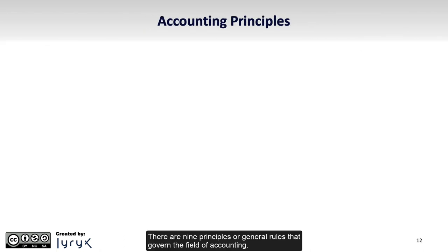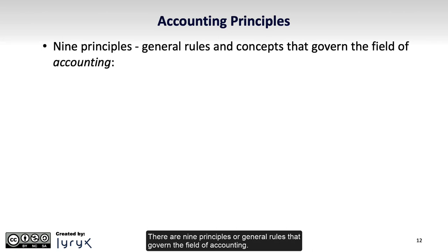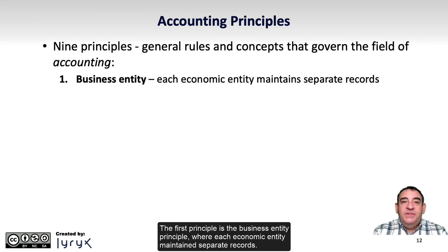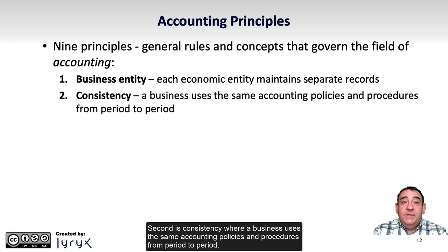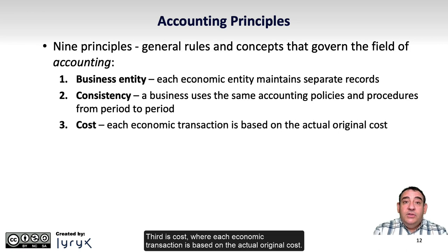There are nine principles or general rules that govern the field of accounting. The first principle is the Business Entity Principle, where each economic entity maintains separate records. Second is Consistency, where a business uses the same accounting policies and procedures from period to period. Third is Cost, where each economic transaction is based on the actual, original cost.